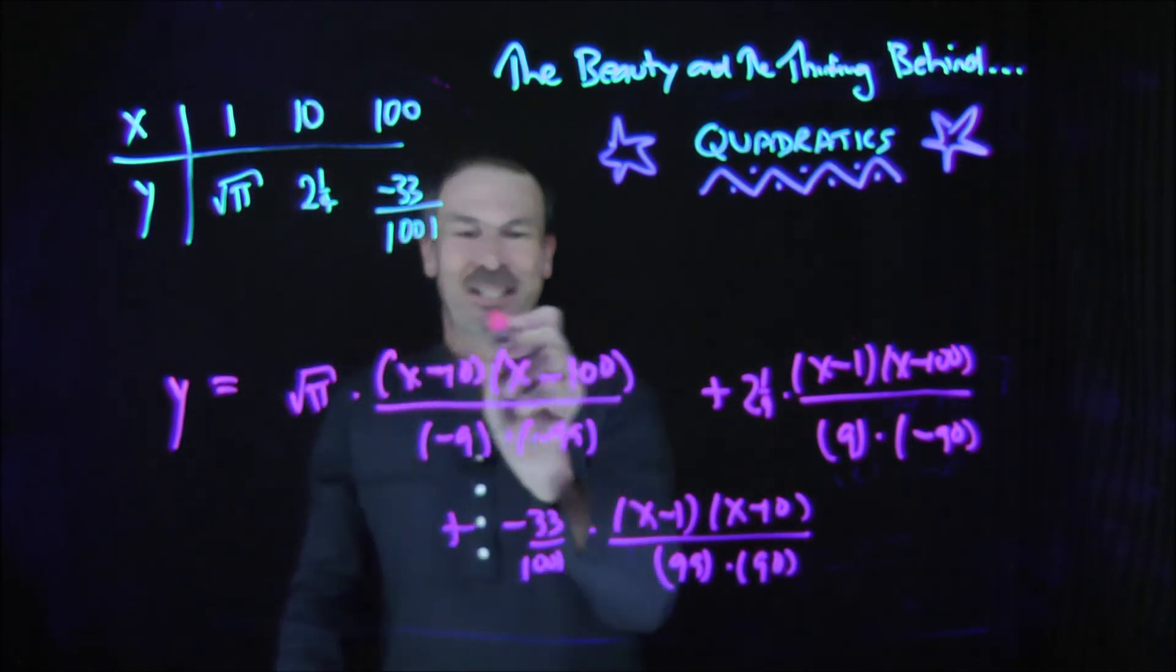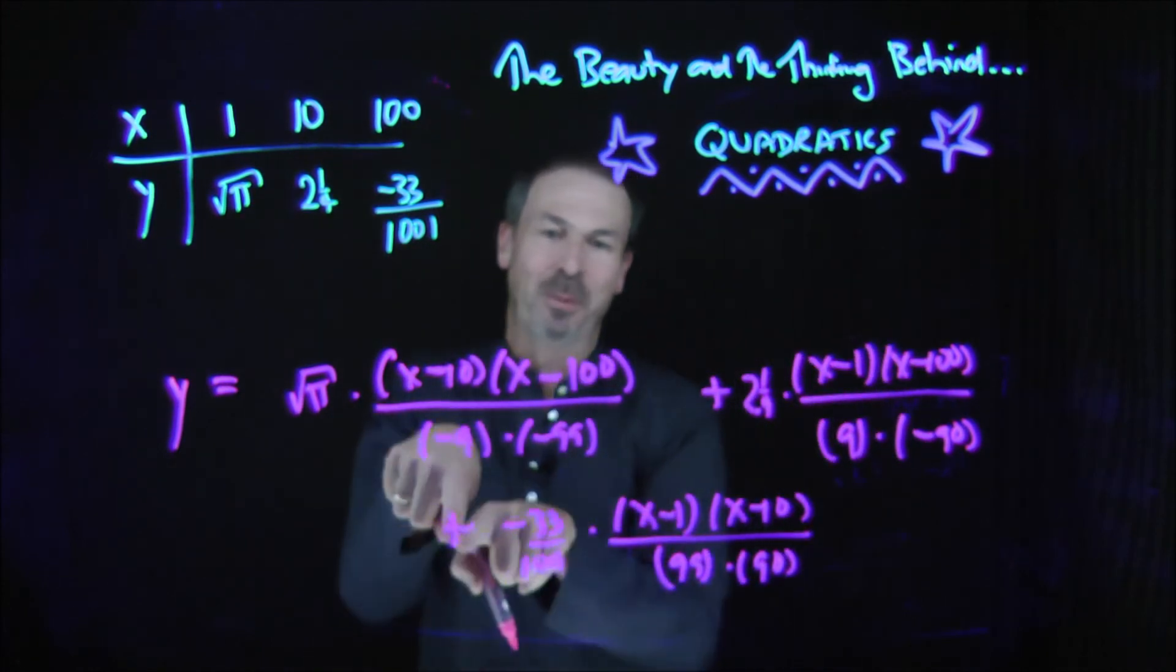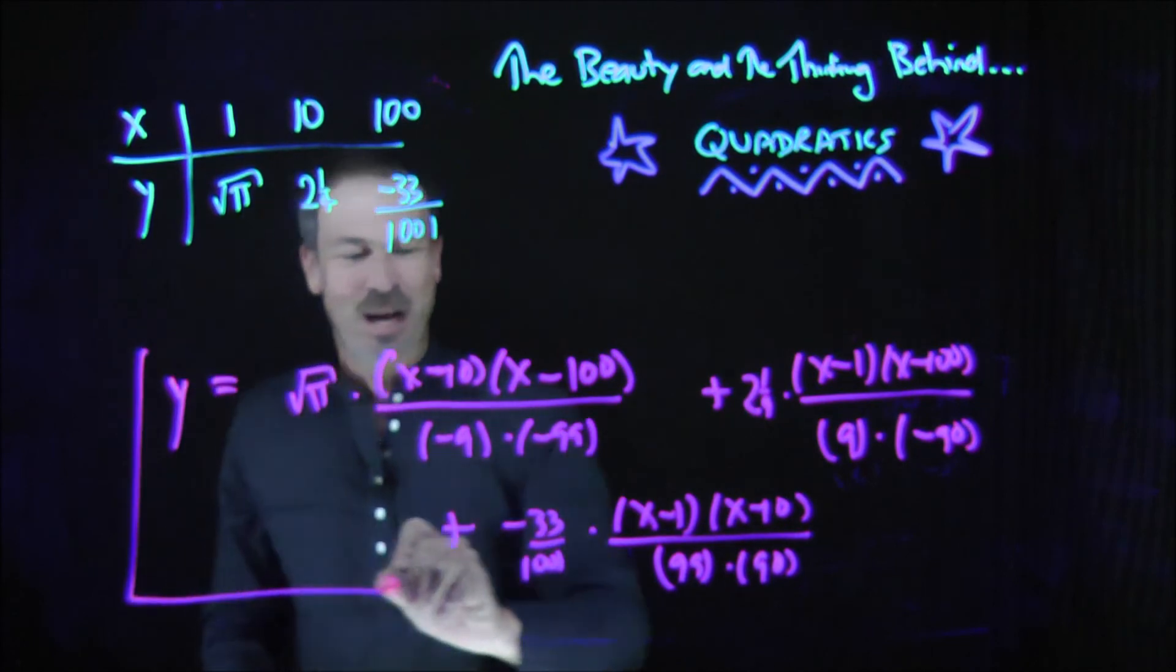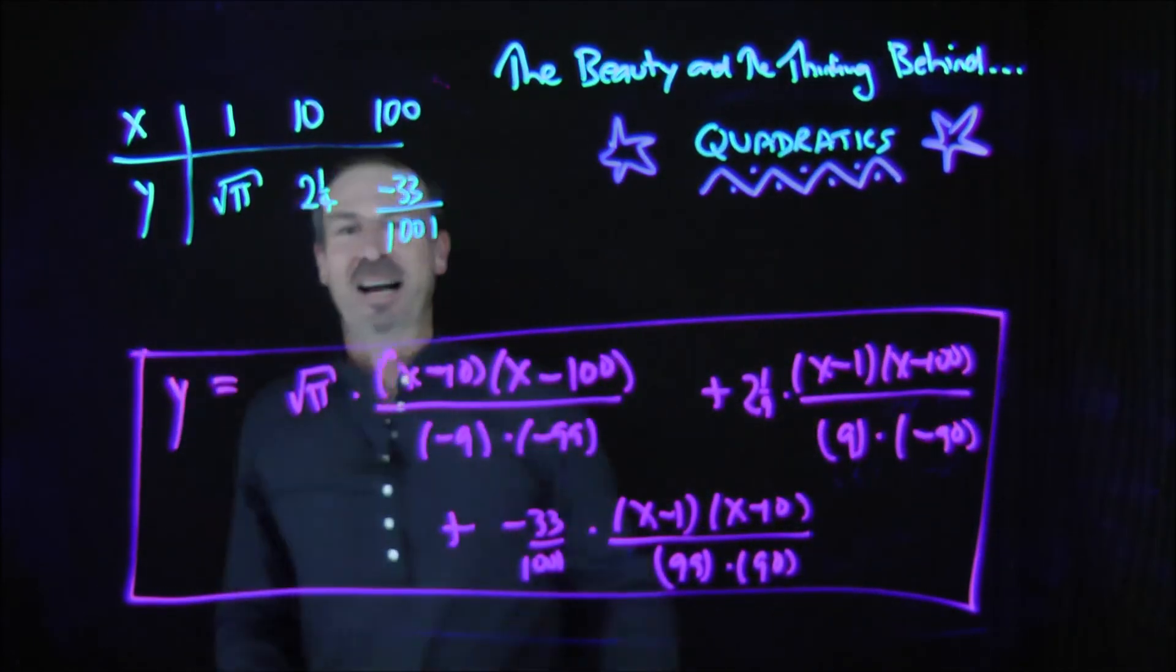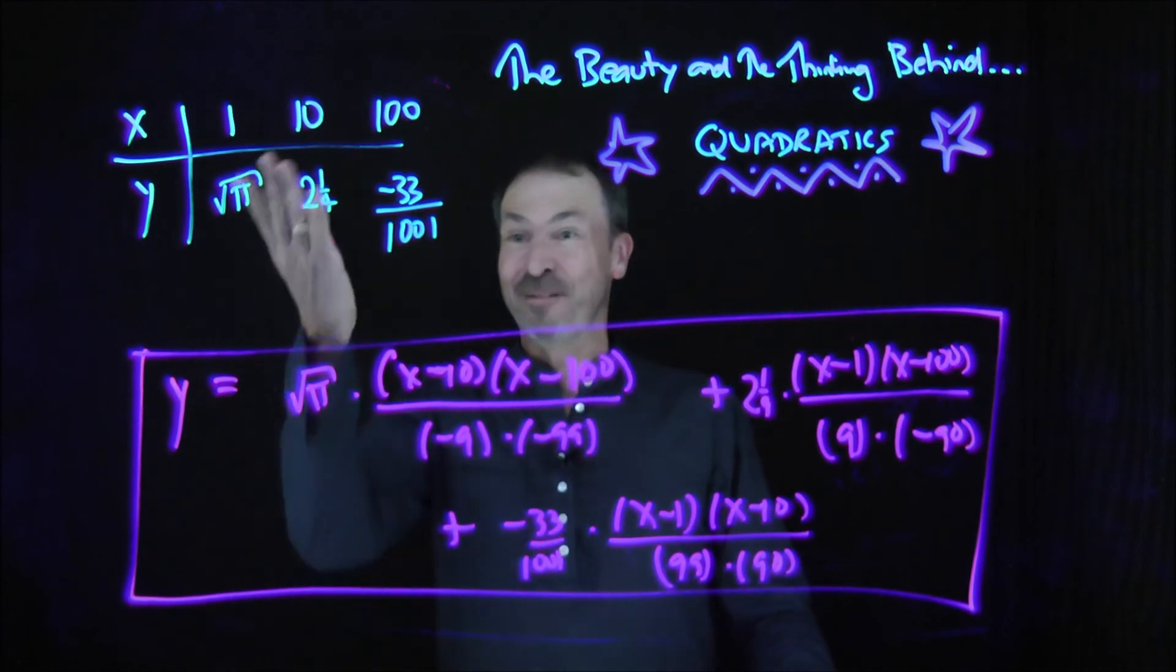So it would be these three terms, this term plus this term plus negative 33 over 1,001. Most people want to put a minus sign there. I'm getting tongue-tied. But there we are. There is a beautiful quadratic that fits that data.